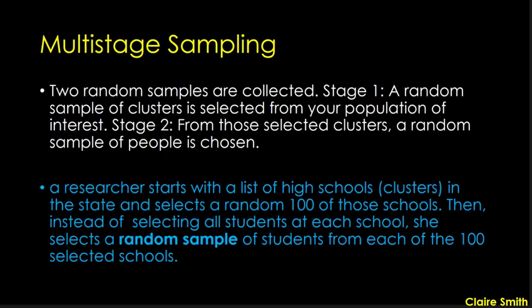Multi-stage sampling is similar to cluster sampling but has multiple stages. In the first stage, you get a random sample of clusters. In the second stage, from those clusters, a random selection of individuals is chosen. Using the same high school example: you list all 952 high schools, randomly select 100, but instead of sampling all students in each school, you take a random sample of students within each selected high school. That's the key difference from cluster sampling.